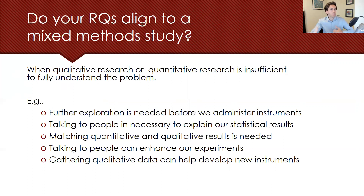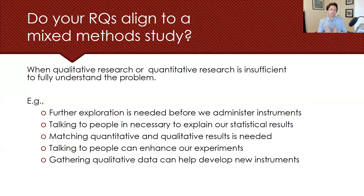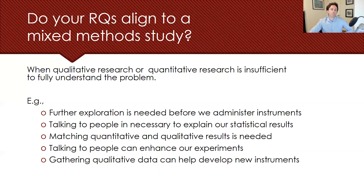Talking to people may be necessary to explain our statistical results. Maybe we found a correlation between reading motivation and achievement scores, but we want to figure out the nuances — what led to the motivation, what's the essence of why that correlation exists. Another reason is matching quantitative and qualitative results. A fourth is talking to people to really enhance our experiments — in education we often do quasi-experimental research, and talking to people can get at more than numbers alone. The fifth is gathering qualitative data to help develop new instruments, since qualitative feedback can improve our quantitative research accordingly.